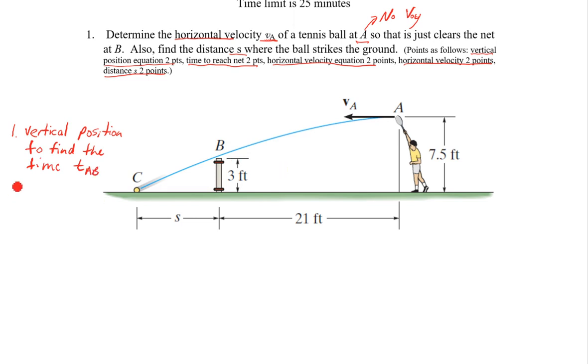We can use that time to calculate VA. So that horizontal velocity is going to be that distance over however long it takes to get to here. Step three, that's what we need. We need the time to reach the net. That horizontal velocity equation, the horizontal velocity.